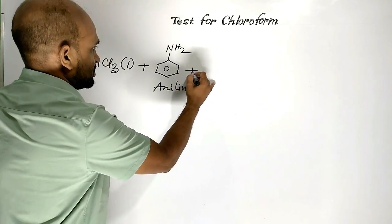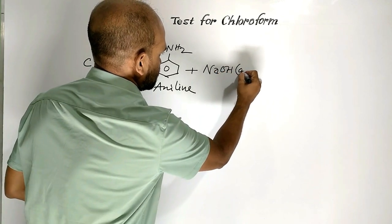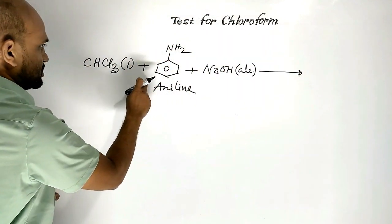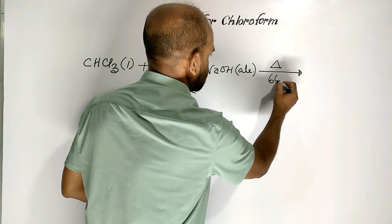And alcoholic sodium hydroxide is added here. Then the reaction is conducted by heating at 60 degree Celsius temperature.